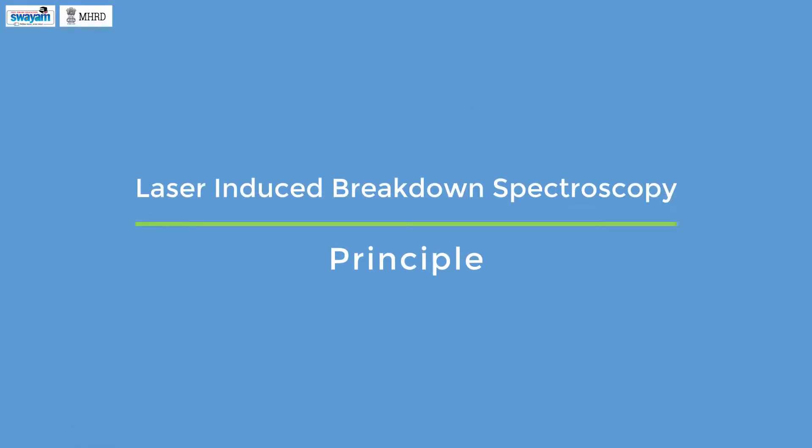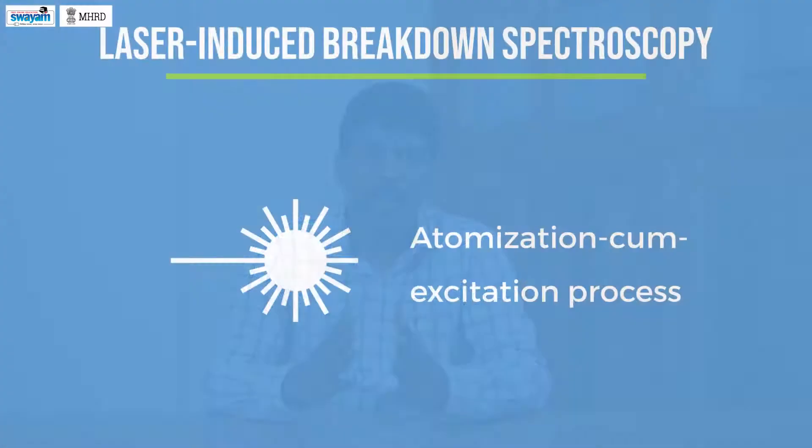The principle of laser induced breakdown spectroscopy is known as LIBS in short form. Having understood the concept of AES, it is easy to understand the principle of LIBS. LIBS is one type of atomic emission spectroscopic technique in which a high energetic laser pulse is used for the atomization cum excitation process. In this method, a laser is focused onto a sample that forms a plasma which atomizes and excites the sample. The formation of the plasma begins only when the focused laser exceeds a certain threshold for optical breakdown, and this generally depends upon the environment and the target material.